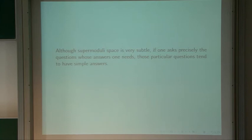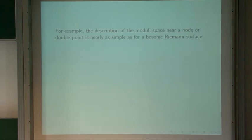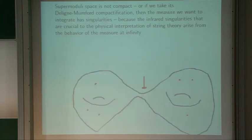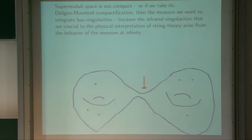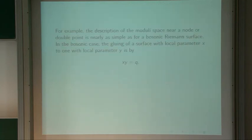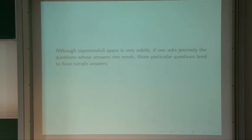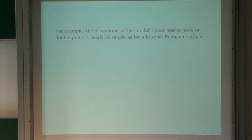In super-moduli space, if you ask a question that you actually need the answer to for the theory to work, it tends to have a simple answer. Something we definitely need to know is how super-moduli space behaves at infinity — we need to know there is a Deligne-Mumford compactification and something about what it looks like. That has a simple answer almost as simple as the corresponding answer for ordinary Riemann surfaces. Let's review the answer for an ordinary Riemann surface: the basic singularity is that two branches cross at a double point. If Q is zero the surface becomes singular, with two branches parameterized by X and Y, so XY = Q models this gluing with gluing parameter Q.